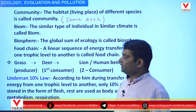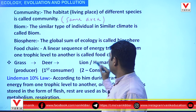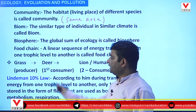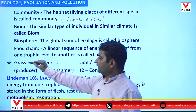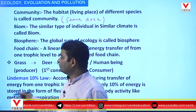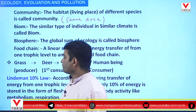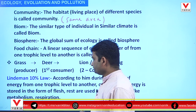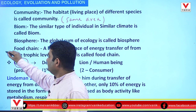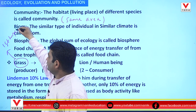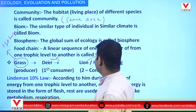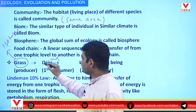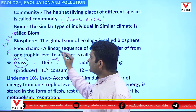Now, Food Chain — what does it mean? Consider this example: Grass → Deer → Lion or Human Being. The deer eats the grass, and the lion or human being can eat the deer. They eat each other to get energy. The grass does not eat anything because it can prepare its own food — that is why grass is called the Producer, and the others are called Consumers. Deer is the first consumer and lion/human is the second consumer. In ecology, this is called the Trophic Level — grass is the first trophic level, deer the second, and lion the third. Energy transfer is linear, so the linear transfer of energy from one trophic level to another is called a Food Chain.